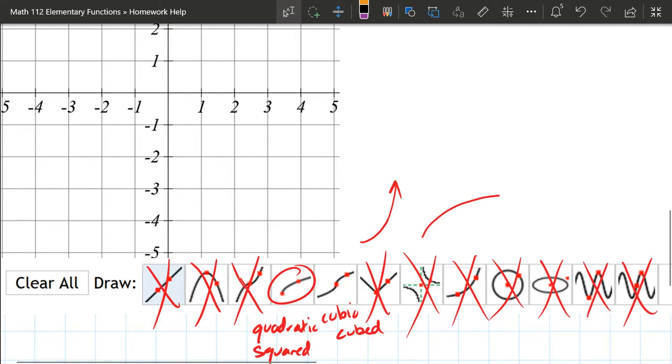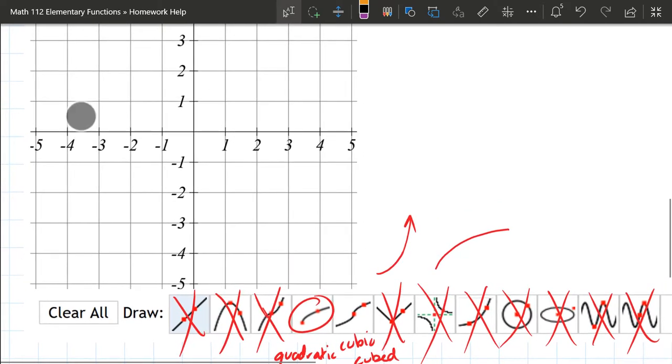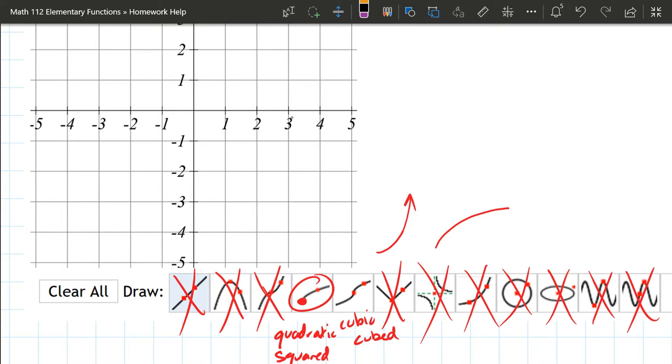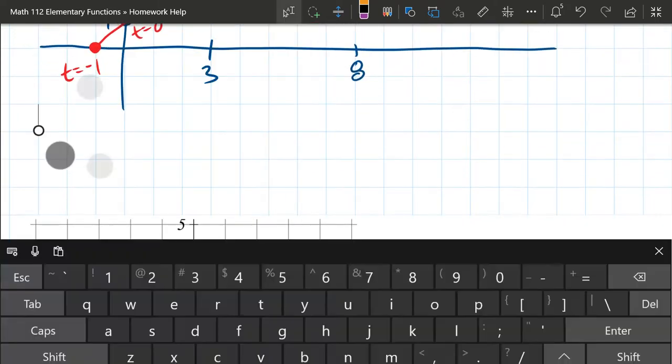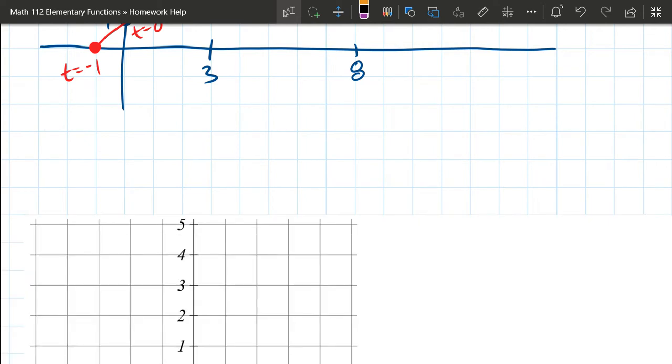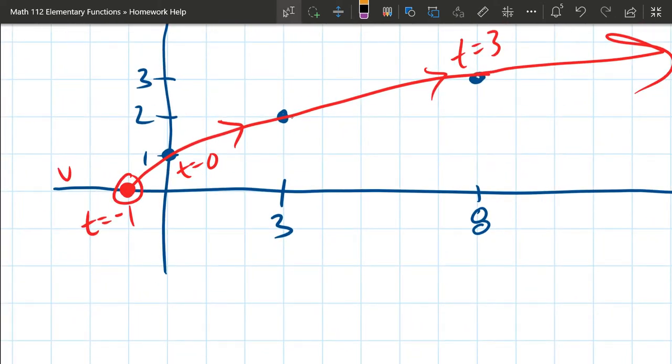Alright, when it comes to actually graphing this, let's look back at our graph. What we're going to need is a vertex and a second point. The vertex you do not have a choice on. So our vertex is going to be this point right here.